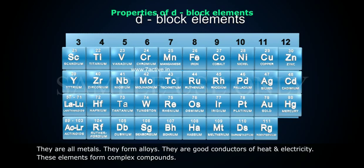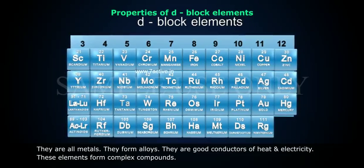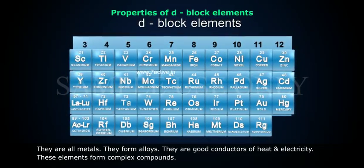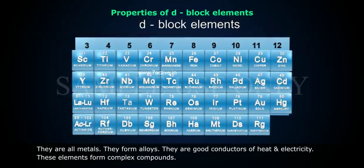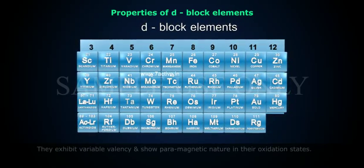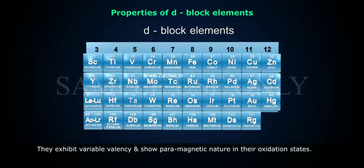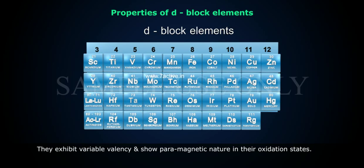Properties of d-block elements: They are all metals. They form alloys. They are good conductors of heat and electricity. These elements form complex compounds. They exhibit variable valence and show paramagnetic nature in the oxidation states.